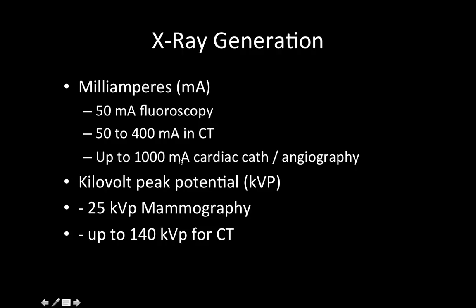Here is a list of some examples of typical mA settings: for fluoroscopy it's low, and it increases all the way to 1,000 for angiography and cardiac cath. In terms of KVP, mammography is one of the lowest examinations, while 140 KVP for CT is a setting more similar to what we use in regular chest radiographs. That has an important implication in radiation dose.